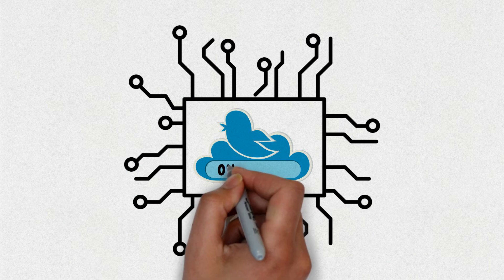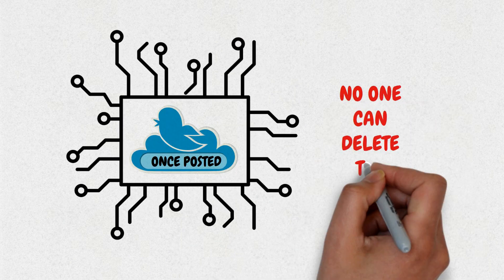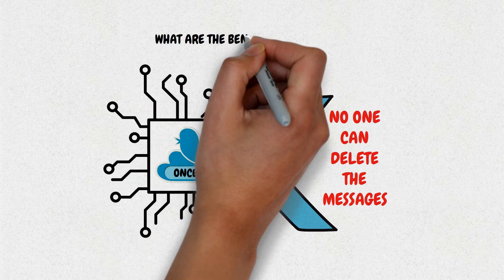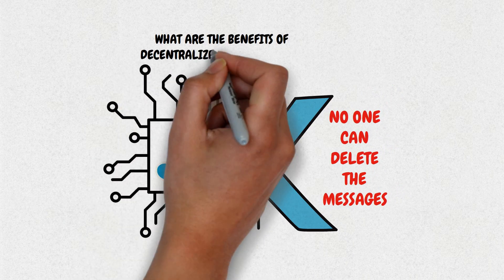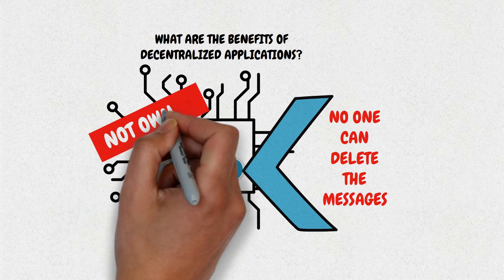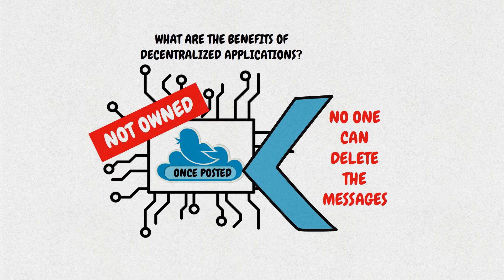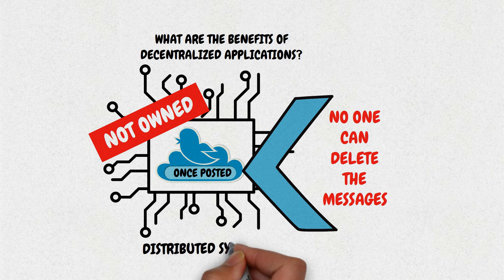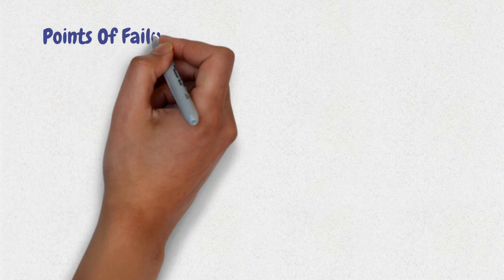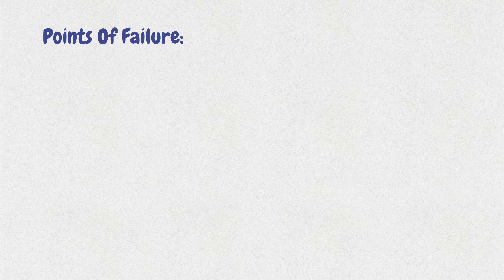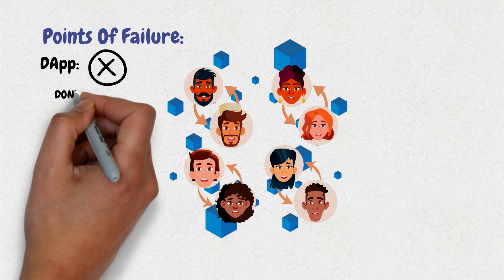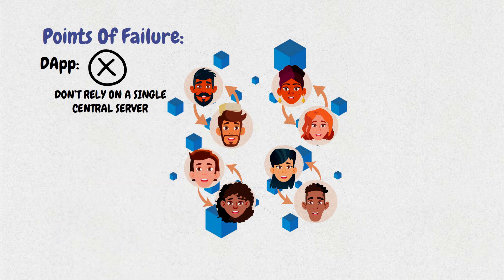Once posted, no one — including the app creators — can delete the messages. What are the benefits of decentralized applications? Since decentralized applications are not owned by an individual or a company and are deployed on distributed systems, they have the following features. First, no single point of failure: individual users' machines don't rely on a single central server to handle processes.